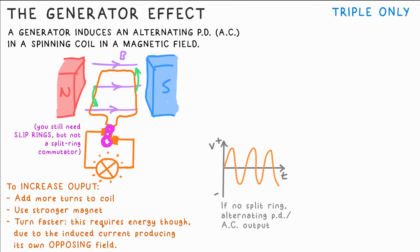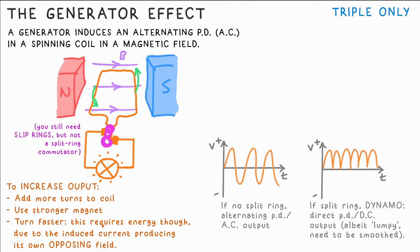Some dynamos have a split ring commutator or circuitry such that they produce DC instead of AC. It will be lumpy DC though. AQA say generators produce AC while a dynamo produces DC.